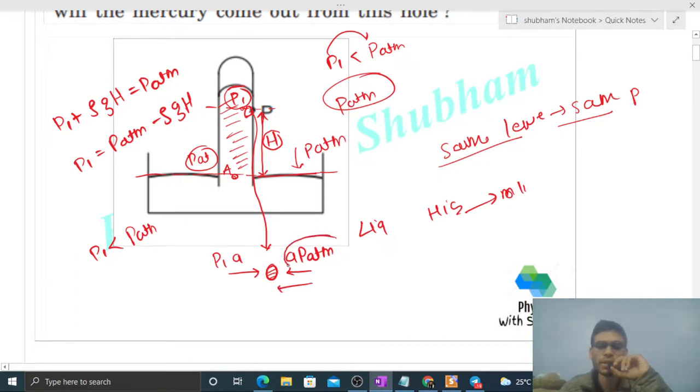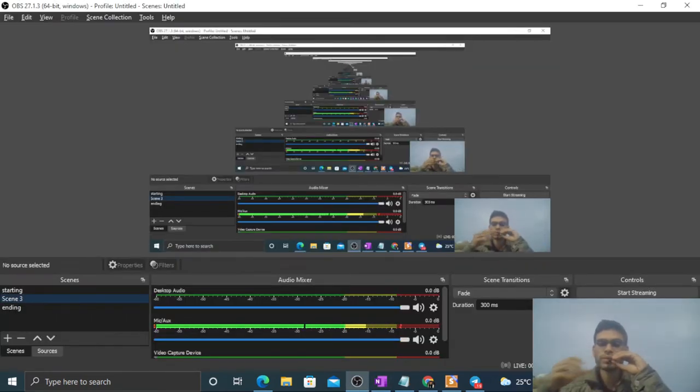That's why the mercury cannot come out from this barometer tube. So I think you have understood. Let me know if you still have any confusion. Okay guys, keep working hard, best of luck.